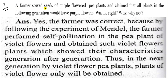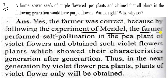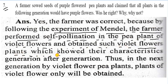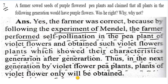Question 7: A farmer sowed seeds of purple flower pea plants and thought all plants in the following generation would have purple flowers. Was he right? Yes, the farmer was correct because by following Mendel's experiment, the farmer performed self-pollination in the pea plant of violet flower and obtained violet flower plants which showed their characteristics generation after generation. In the next generation, plants of violet flower only will be obtained.